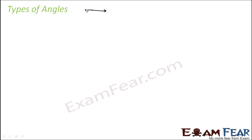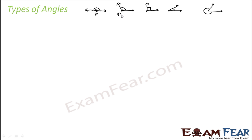If you want to draw an angle, you can draw one that is 180 degrees, or one that is 90 degrees, or one that is less than 90 degrees, or one that is greater than 90 degrees. In all these cases, these are the vertices — let me mark them as A, B, C, D — and these are the arms. In one case the angle is 180 degrees, and in another it is greater than 90 but less than 180.